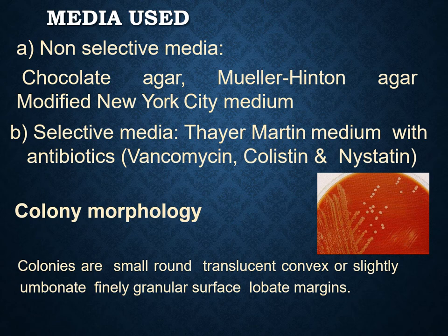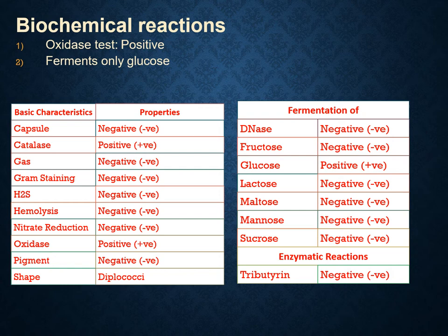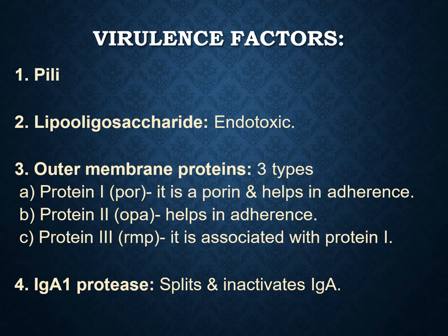The surface is granular and it has a low wet margin. The biochemical characteristics of Neisseria gonorrhoeae show only positive results for catalase and oxidase; all other tests are negative. For example, gram staining is negative, H2S production is negative, it doesn't reduce nitrate, it doesn't produce any pigments. In terms of sugar fermentation, it ferments only glucose and doesn't ferment other sugars. It doesn't produce any DNase enzyme and it is also negative for tributyrin.